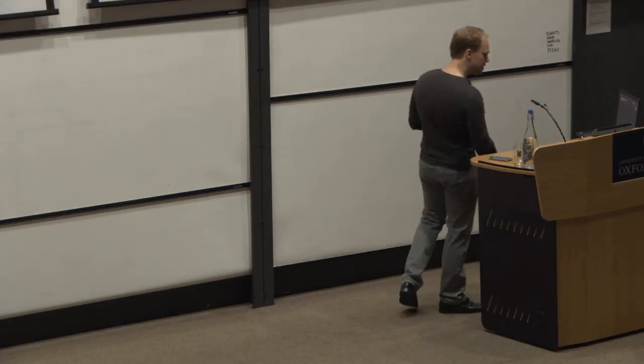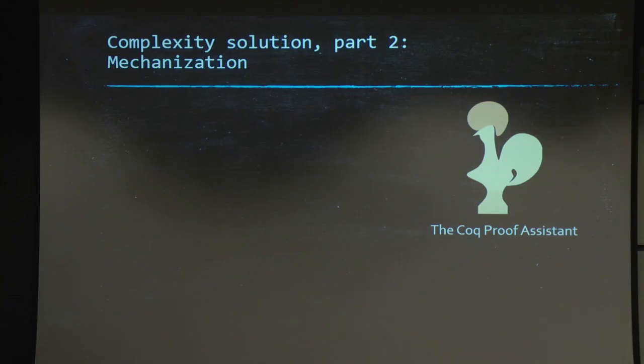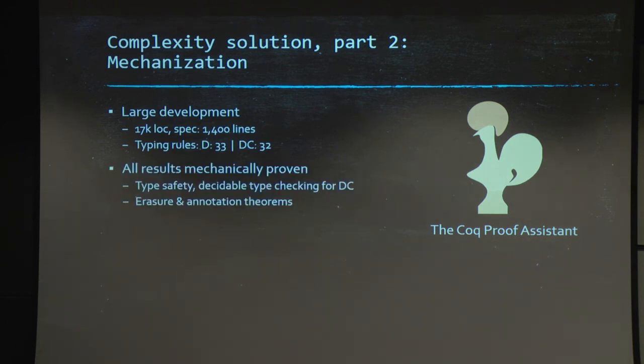And now let me touch on the mechanization quickly. So we've done everything in Coq. It's a fairly large development. Here are some specs about it. We've proven all the results we need for this. But, you know, there's essentially one point I'd like to make here. Which is, you know, this one wasn't an afterthought. We actually mechanized the system when we were designing it. And this allowed us to actually get rid of some bugs we had in earlier designs. And I think that now mechanization frameworks have come to a point where they critically enable the study of theories that may be large, complex, intricate, but that are interesting.